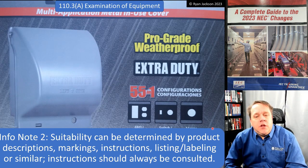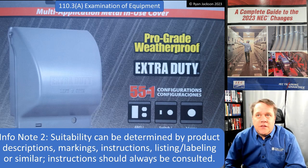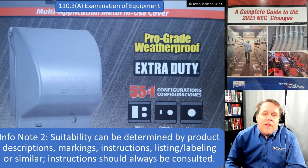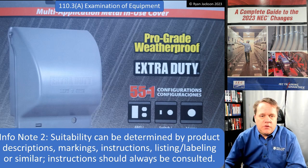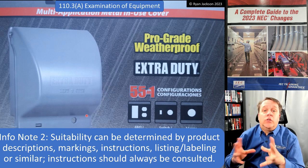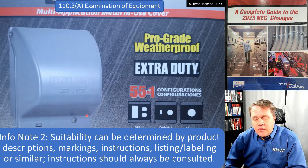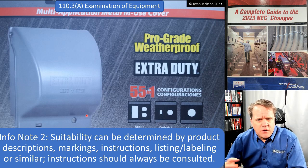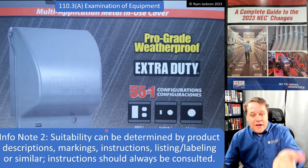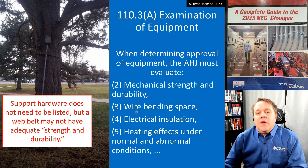Informational Note 2 says suitability can be determined by product descriptions, markings, instructions, listing and labeling, or similar. For example, Section 406.9(B) says certain receptacles in wet locations might require a cover that's weatherproof while in use — an in-use cover or bubble cover, called an outlet box hood. Those hoods must be listed and identified as extra-duty. How do I know this product is extra-duty? Because the manufacturer's marking says so. Suitability can be determined by product descriptions and markings.